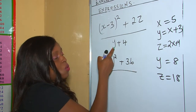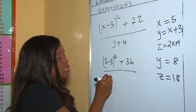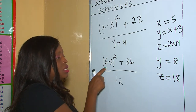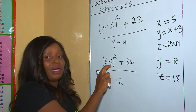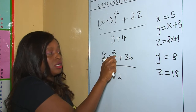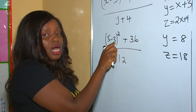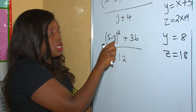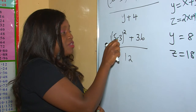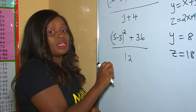All this divided by y plus 4. Our y is 8, so 8 plus 4 is 12. Looking at the squared part — whatever is inside the bracket is being squared. According to BODMAS, we deal with the bracket first: 5 take away 3 is 2, and 2 squared is 4.